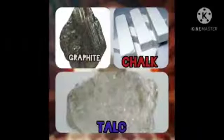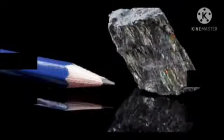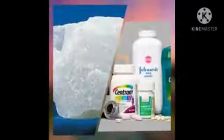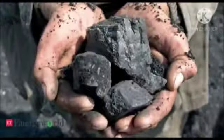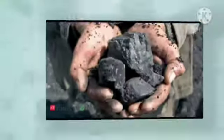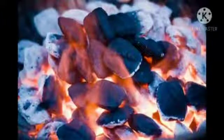Next we have Graphite, Chalk, and Talc. These are soft rocks. Graphite is mixed with clay to make the lead of pencils, and Talc is used to make talcum powder. Coal is also a kind of rock. We use it for lighting fires, and it is dug out from under the ground.